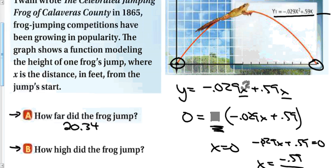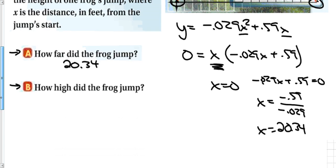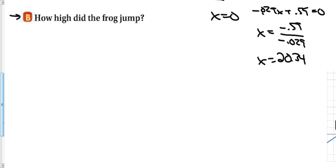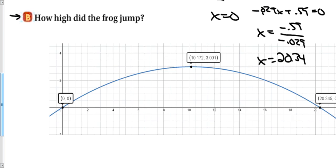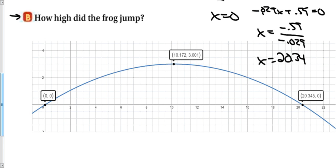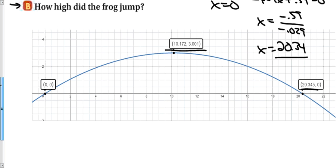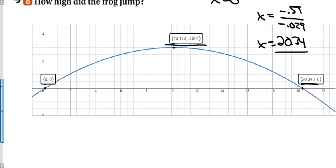Well, if I want to know that, I have to know the vertex, the place where this function got the highest. So in order to help me with that, I'm going to graph the function. And we can see the graph of this function right here. So my estimate right here was pretty close, because this frog landed at 20.345 feet. And I can clearly see the vertex right up here is going to be 10.172 feet.